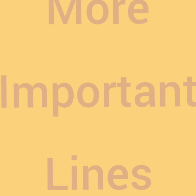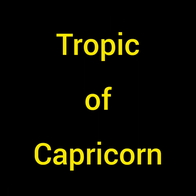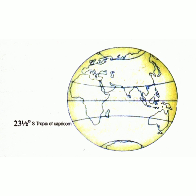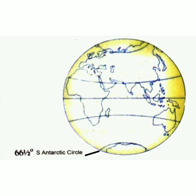Let's know about some more important lines. Tropic of Cancer — it is situated on the 23.5 degree N latitude line. Tropic of Capricorn — it is situated on the 23.5 degree N latitude line. Arctic Circle — it is situated on the 66.5 degree N latitude line.